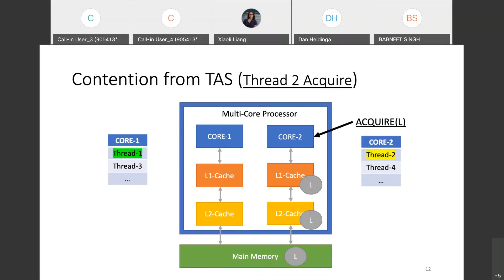Thread 1 still owns the lock, but now thread 2 also wants to acquire it. Thread 2 will execute the CAS operation in an infinite loop until it acquires the lock — this is the acquire function we saw a few slides ago. Every CAS that thread 2 performs will cause bus traffic and cache invalidations. This is not useful work. The CPU utilized for the CAS could be used by other threads to do important work. Some designers would say this is bearable at low lock contention.